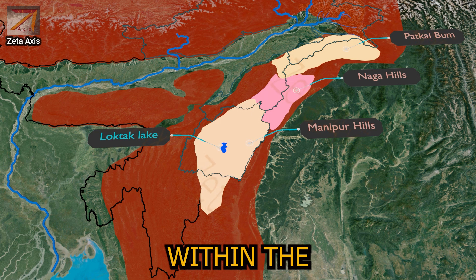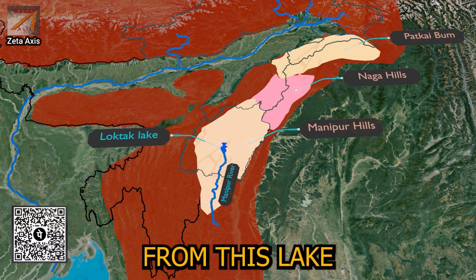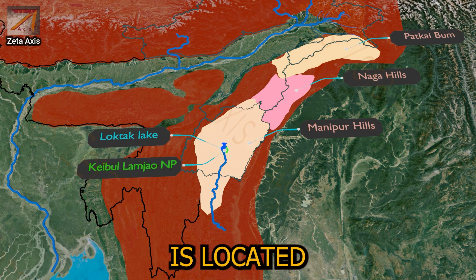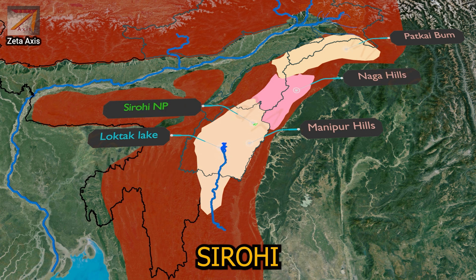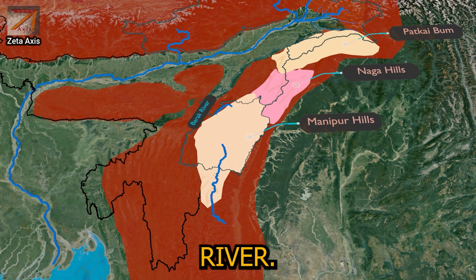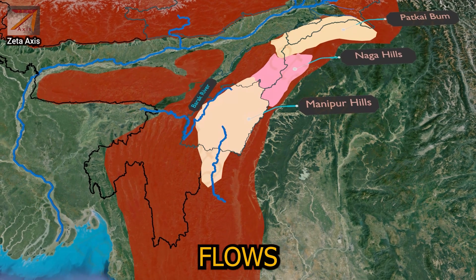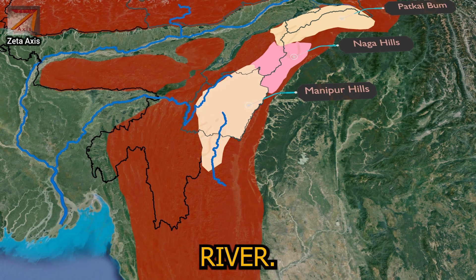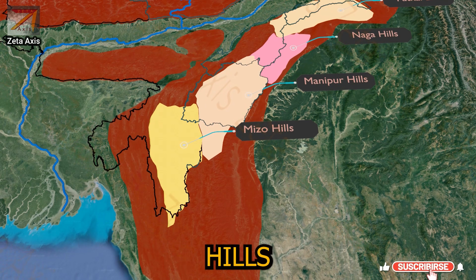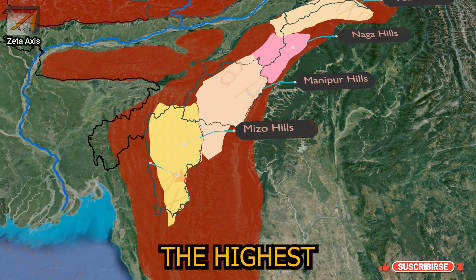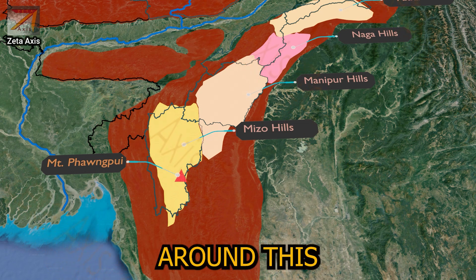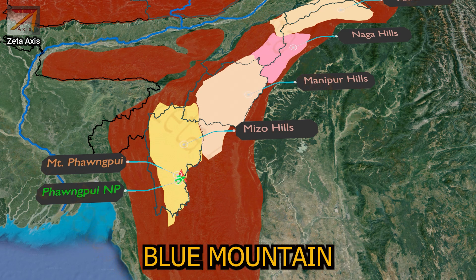Loktak Lake is located within the Imphal valley. The Manipur river originates from this lake and flows into Myanmar to meet the Chindwin river. Keibul Lamjao National Park is located at the banks of Loktak Lake. Shirui National Park is also located in the northern parts of the Manipur hills. The Barak river also originates from Manipur hills, later flowing into Bangladesh to form the Surma river. Further south of Manipur hills are the Mizo hills, also called Lusai hills, which are an extension of the Patkai range. The highest peak of Mizo hills is Phongpui, also called Blue Mountain.